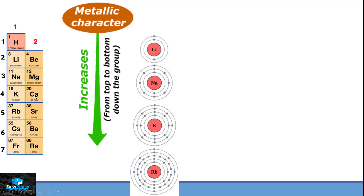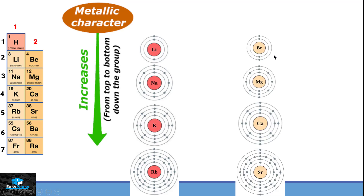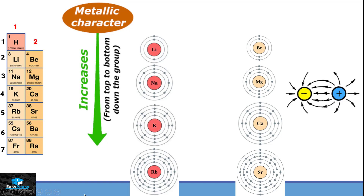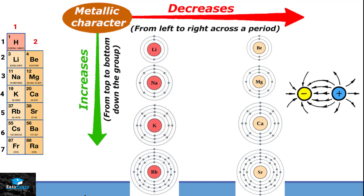Looking across the period, which element is more reactive — sodium or magnesium? Going across the period, the number of shells remains the same, but the number of protons increases — lithium has 3, beryllium has 4, sodium has 11, and magnesium has 12. More protons means more power to attract the valence electrons, so magnesium finds it harder to lose 2 electrons than sodium. So across the period, the reactivity of elements decreases — meaning sodium is more reactive than magnesium.